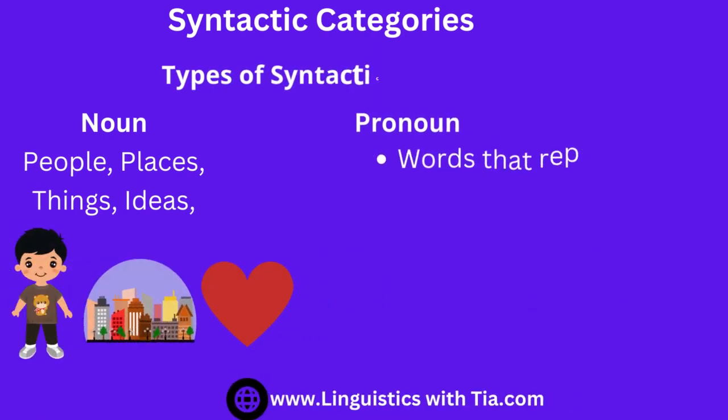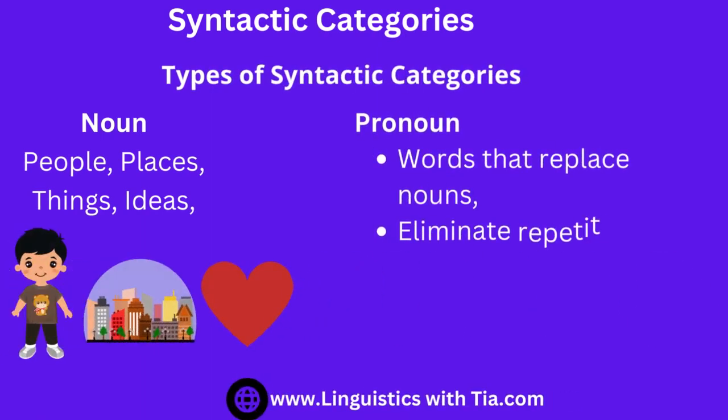The first syntactic category is the noun. Nouns are words that refer to people, places, things, or ideas — for example, boy, city, book, and love. Nouns are the central members of sentences and typically function as the subject or object. They refer to specific entities, either concrete such as trees, or abstract such as love. For example, 'flowers are beautiful' and 'boys are going to college' — flower and boys are nouns functioning as subjects of the sentence.